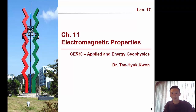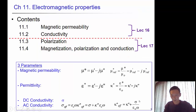Welcome to lecture 17. We will continue talking about electromagnetic properties. In this lecture, we will primarily talk about polarization, and we will summarize the magnetization, polarization, and conduction together.